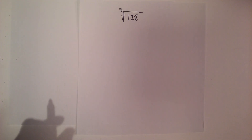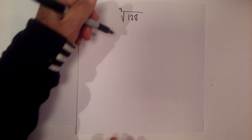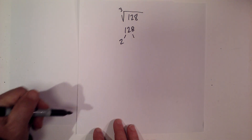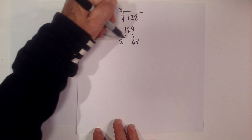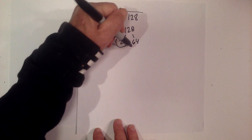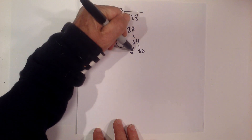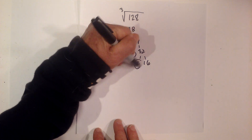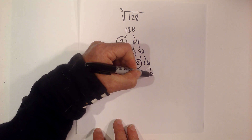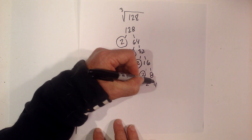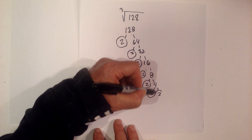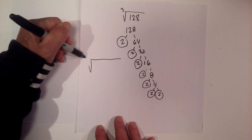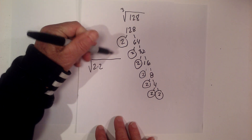Let's work one more — the cube root of 128. Let's create a factor tree. It ends in an even number, so I know that 2 will go into it. 2 times 64 is 128. Then 2 times 32. Circle the 2 because it is prime. Then 2 times 16, then 2 times 8, 2 times 4, 2 times 2. I'm down to prime numbers. Now I can rewrite the cube root of 128 as 2 times 2 times 2 times 2 times 2 times 2 times 2.